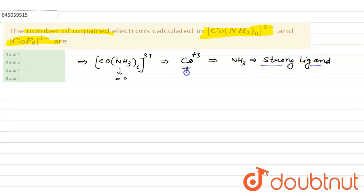Now if ligand is strong, then we know very well that there will be pairing of electrons. Let's write down the configuration of Co^3+. Atomic number of cobalt is 27, so outer electronic configuration is 3d^7 4s^2, but for Co^3+ the electronic configuration will be 3d^6 4s^0.